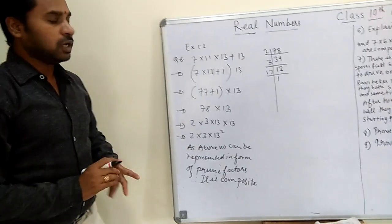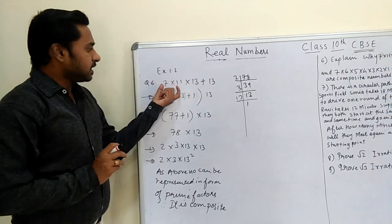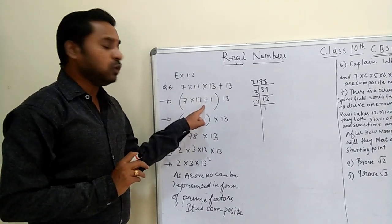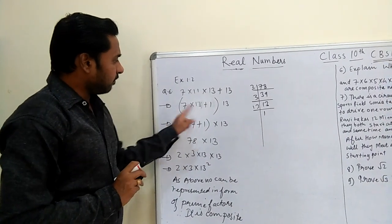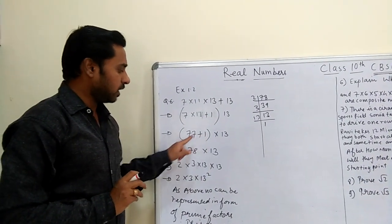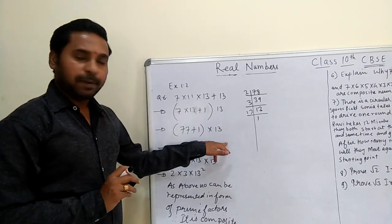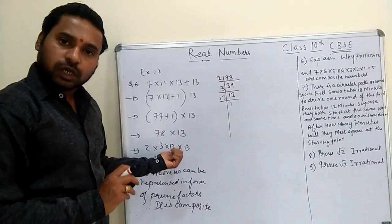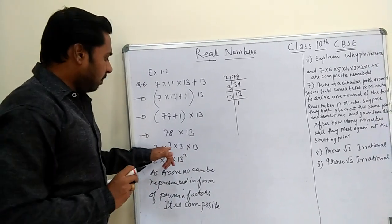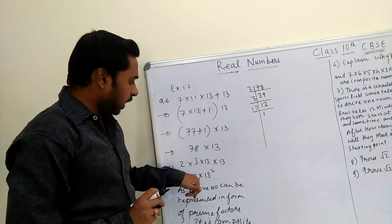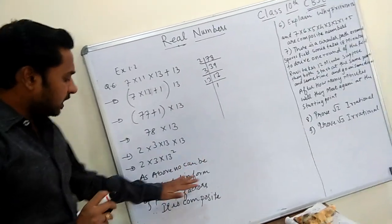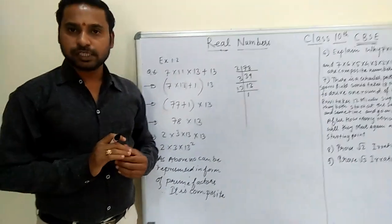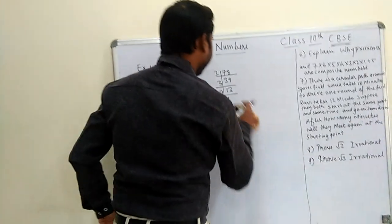For those who didn't understand, let me explain again. We have 7 × 11 × 13 + 13. Here 13 is common, giving us 13 × (7 × 11 + 1). Now 7 × 11 = 77, so we get 78 × 13. We represent 78 as 2 × 3 × 13, and so the full expression is 2 × 3 × 13². As the number can be represented as a product of prime factors, it is a composite number.